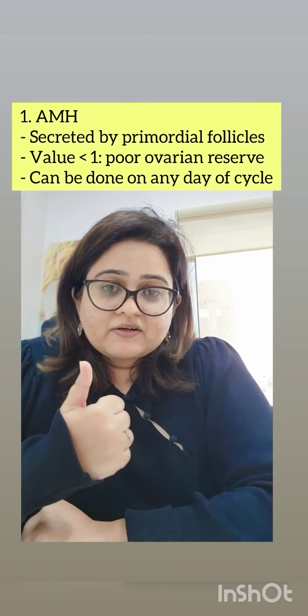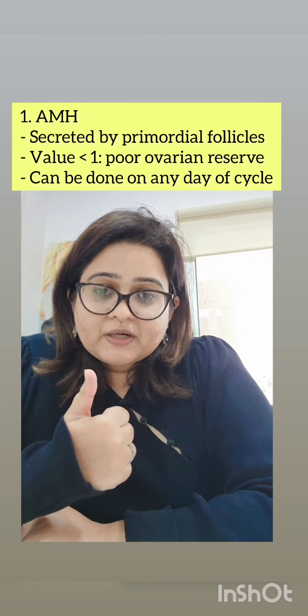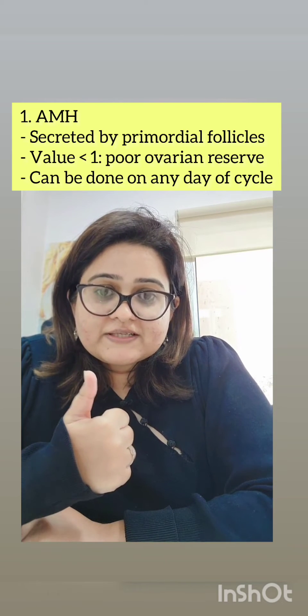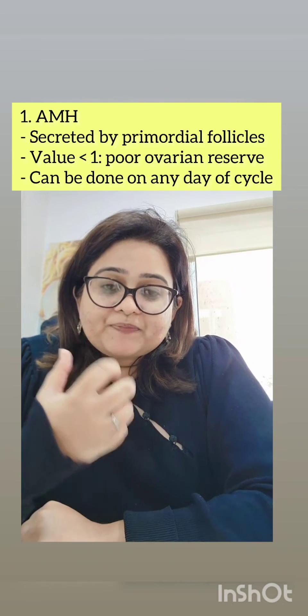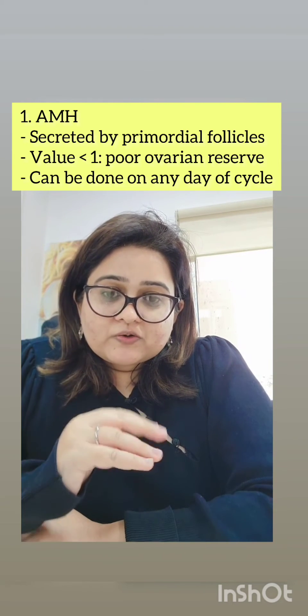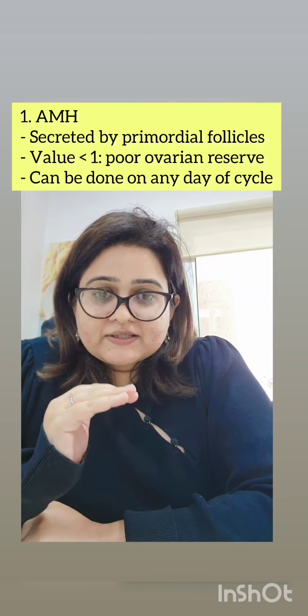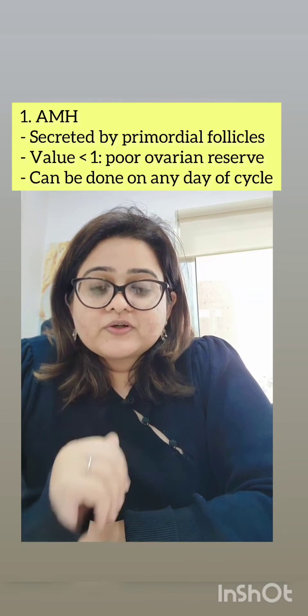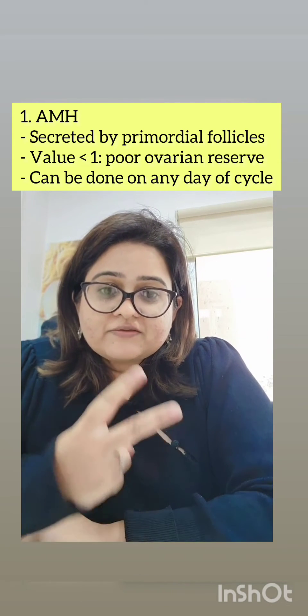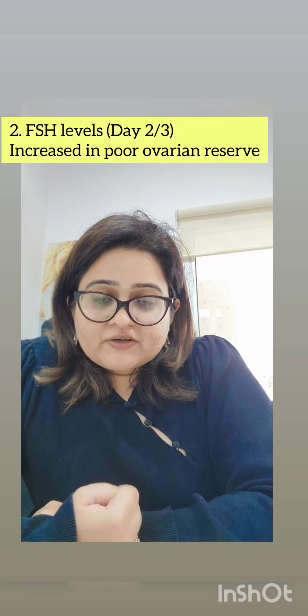The first test is anti-Müllerian hormone (AMH) levels. AMH is a hormone secreted by primordial follicles, and if the follicles reduce, AMH will go down. An AMH less than 1 is a marker of poor ovarian reserve.